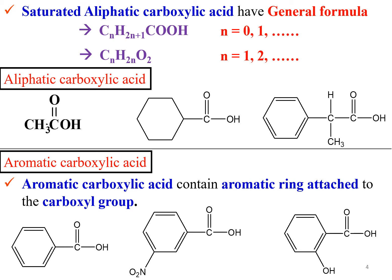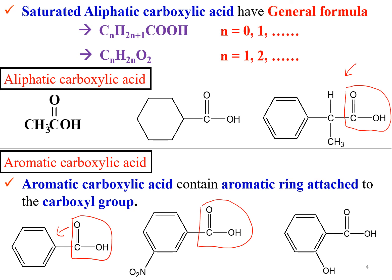Here you can see that for aliphatic carboxylic acid, in this example the COOH is not directly attached to the benzene ring, so it is considered aliphatic carboxylic acid. In the example below, the COOH is directly attached to the benzene ring, so this is considered aromatic carboxylic acid.